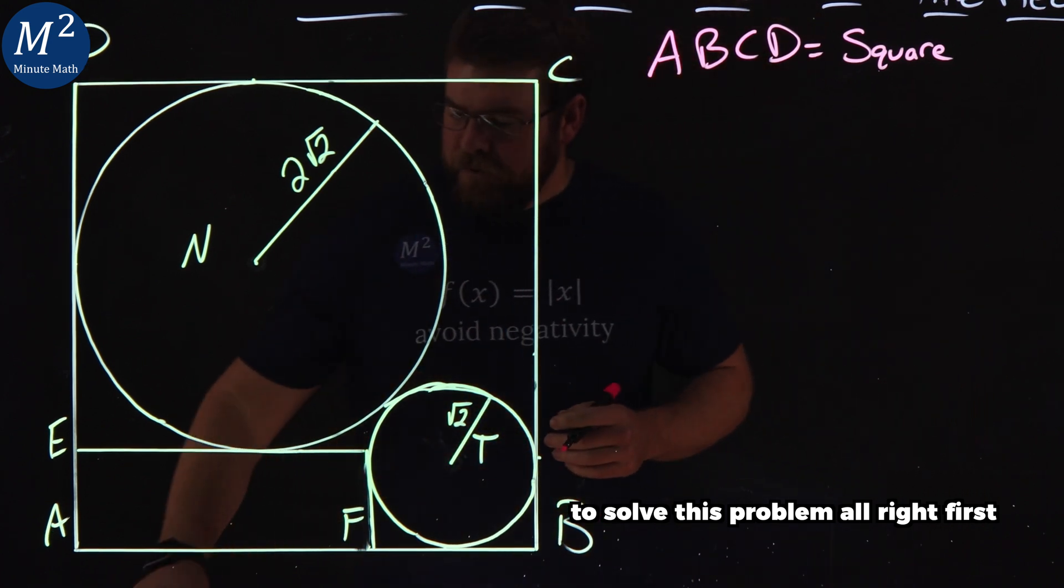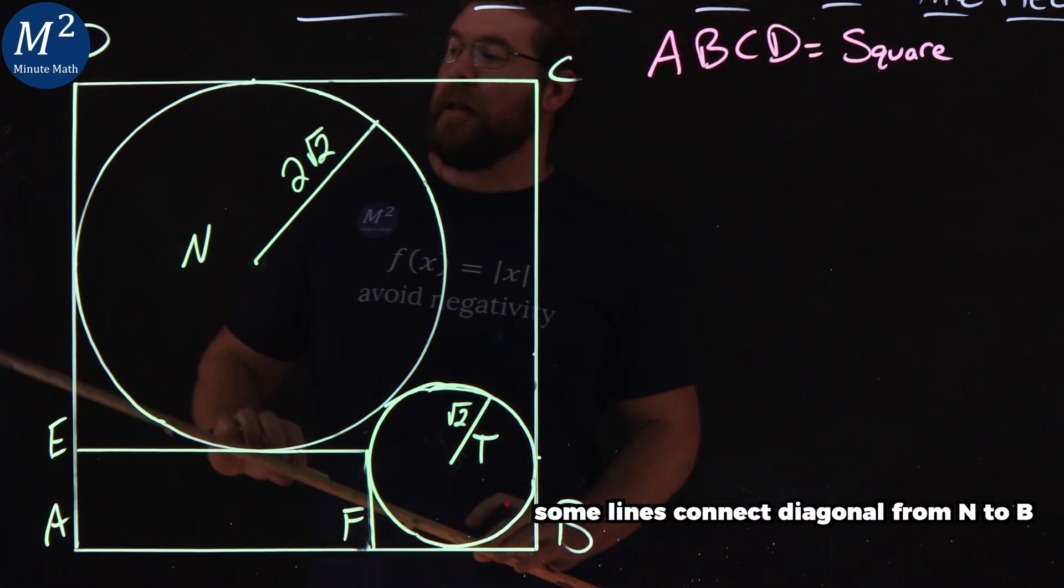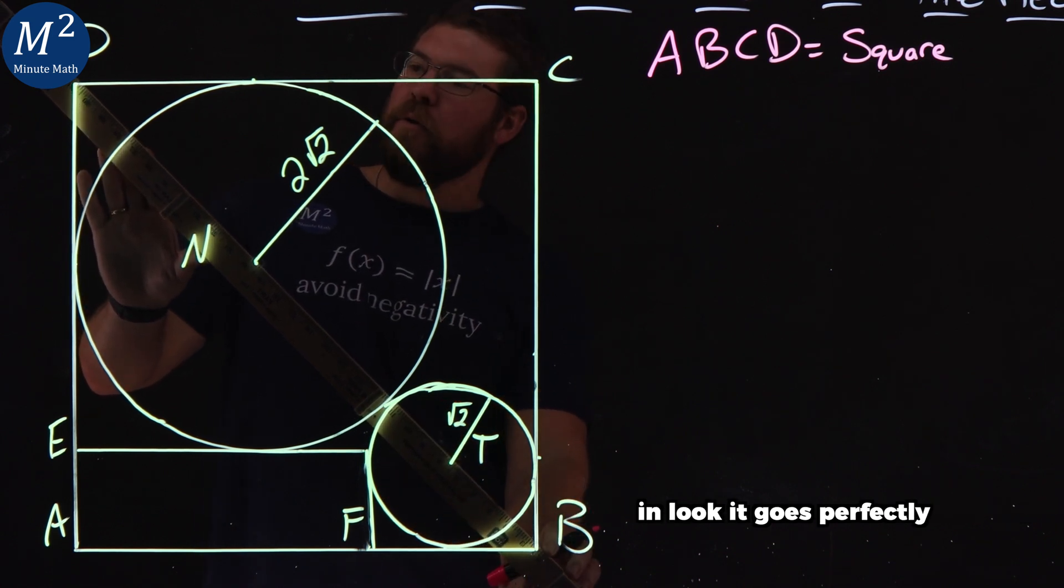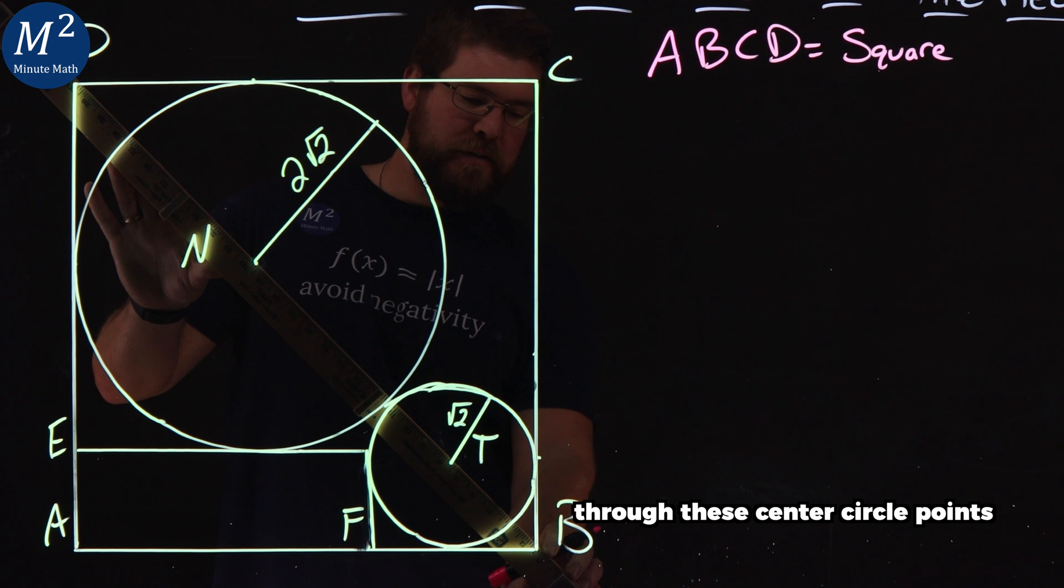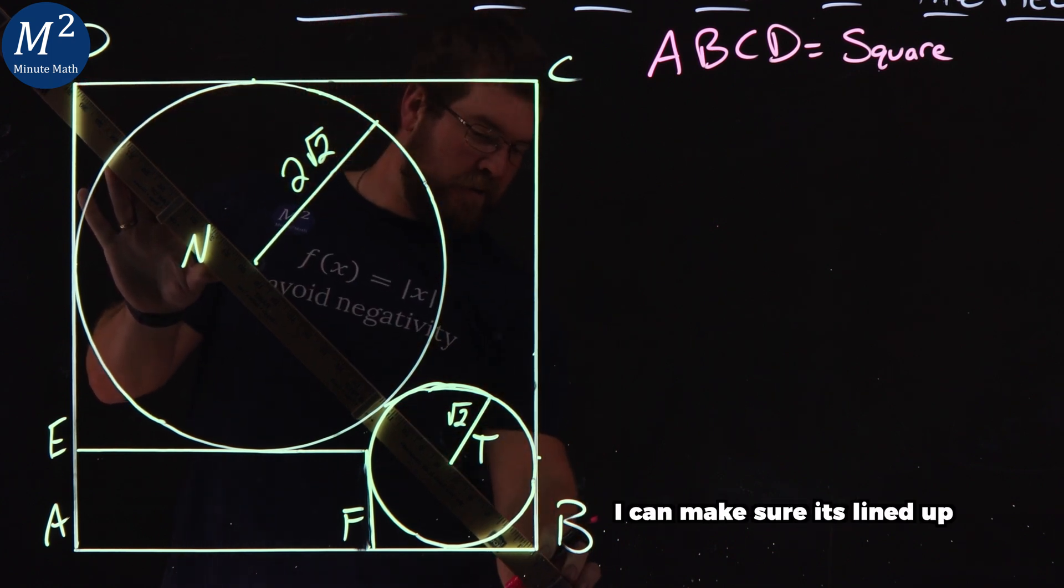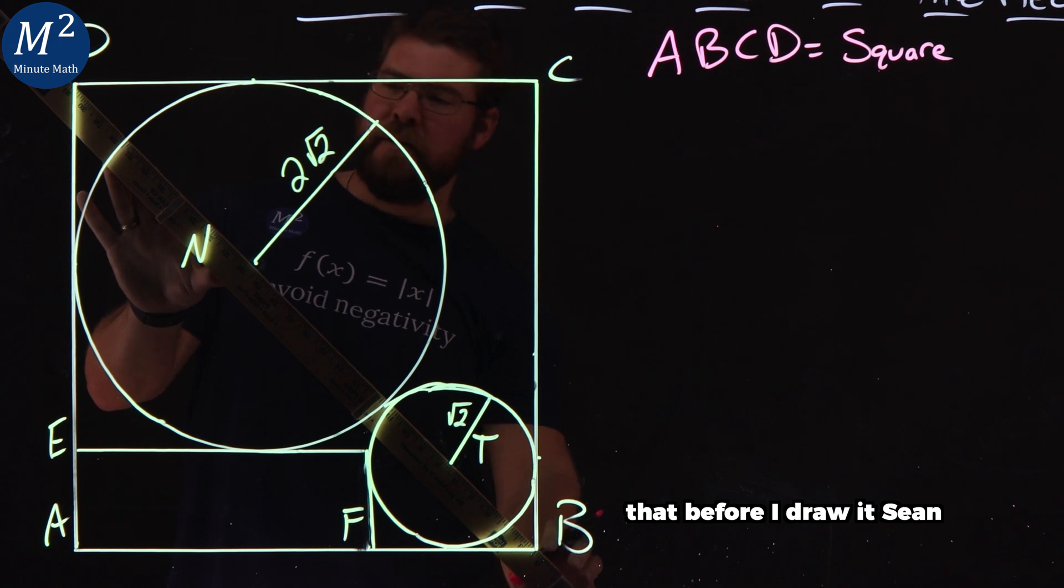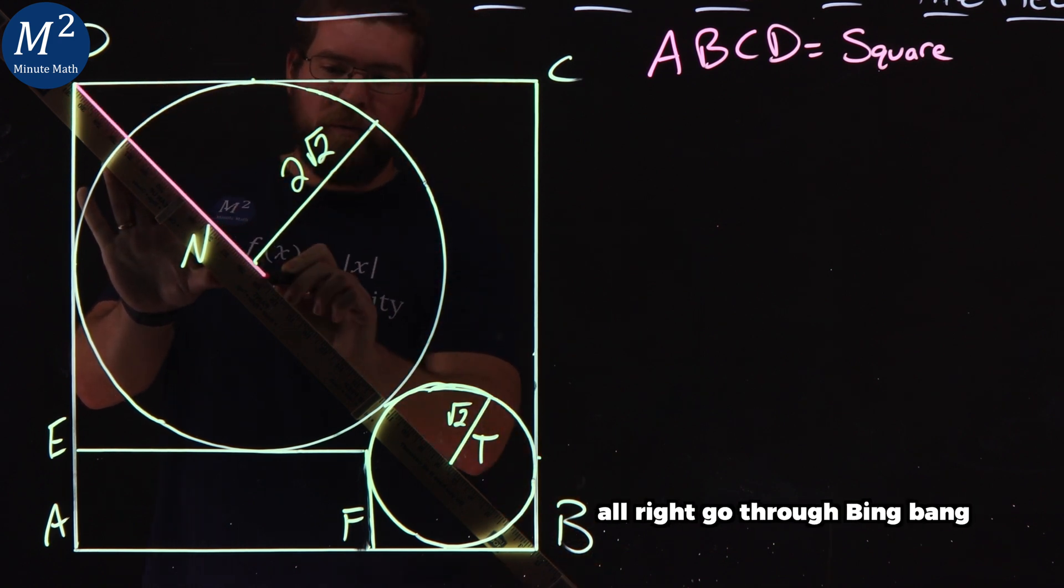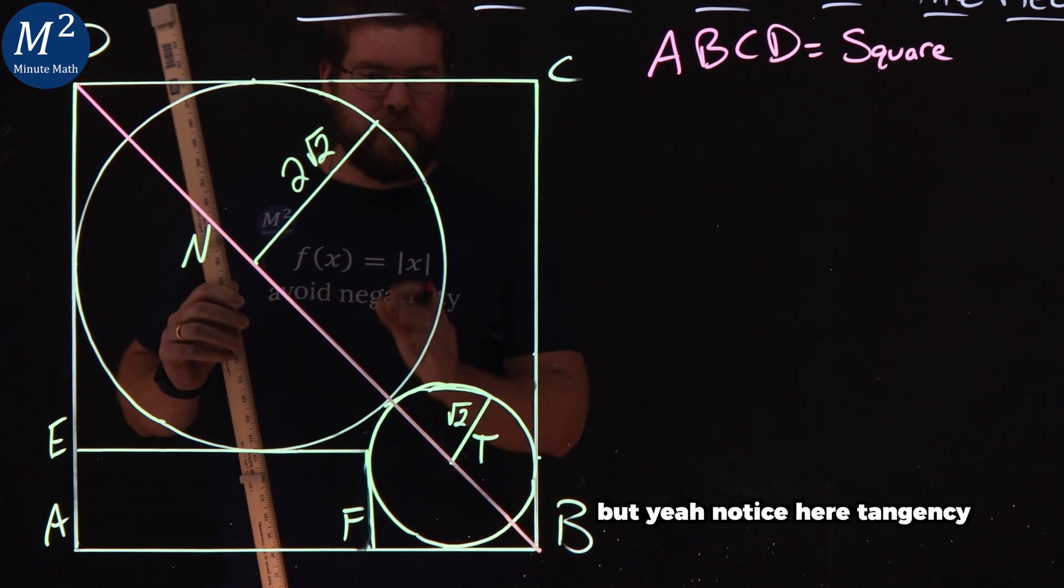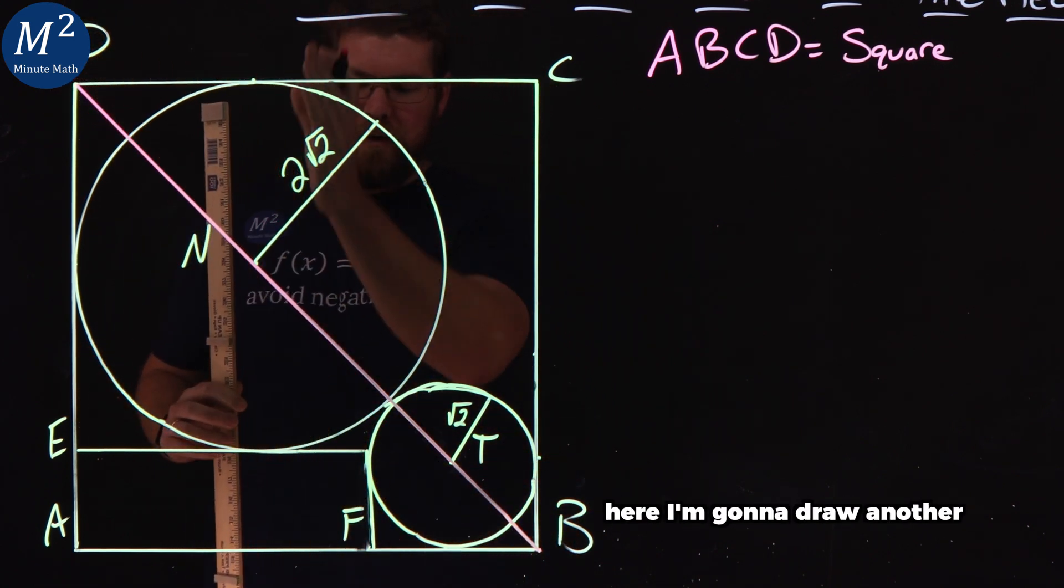Alright, first thing is let's go draw some lines here. I'm going to connect diagonal from N to B and look it goes perfectly through these center circle points. If I can make sure it's lined up before I draw it. Alright, go through. Not perfectly to scale, but yeah, notice the tangency here, line.